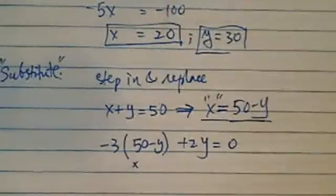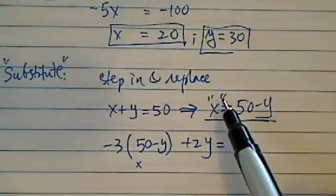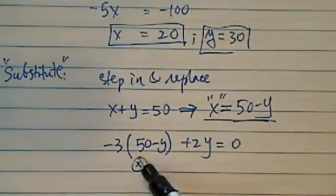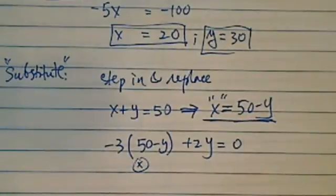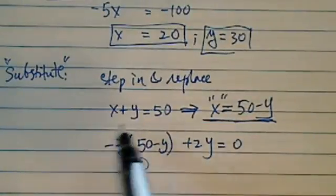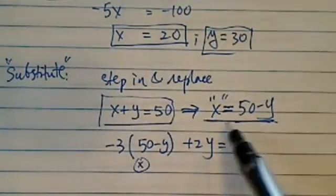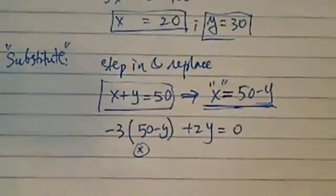Now again, substitute means to step in and replace. In this case, we're choosing to replace x with this equivalent of 50 minus y. And how did I get that? I grabbed one of the equations and solved for one of the variables.